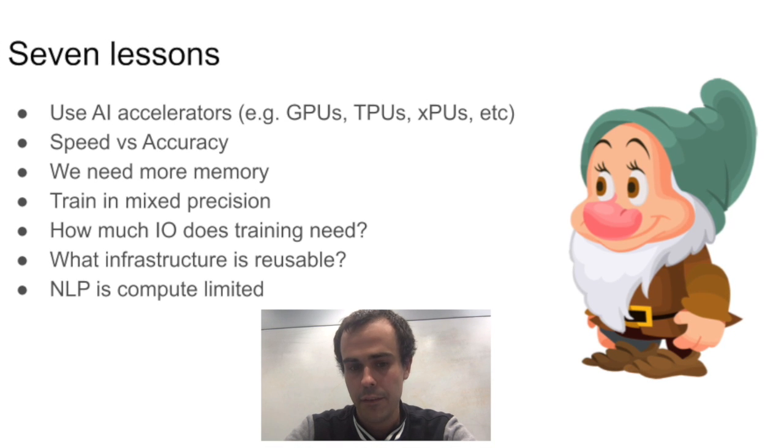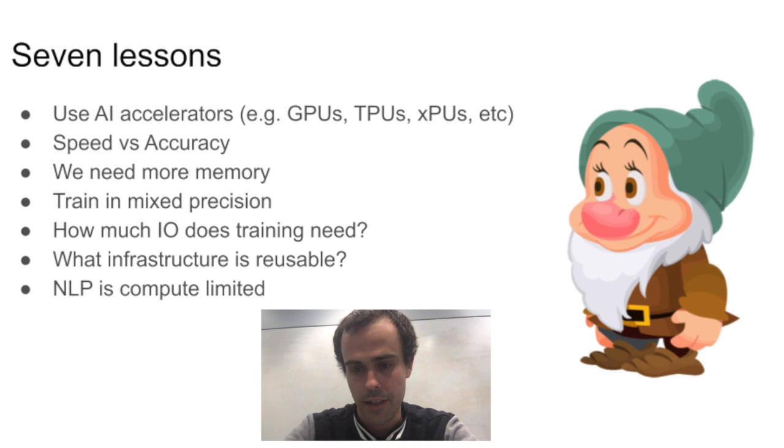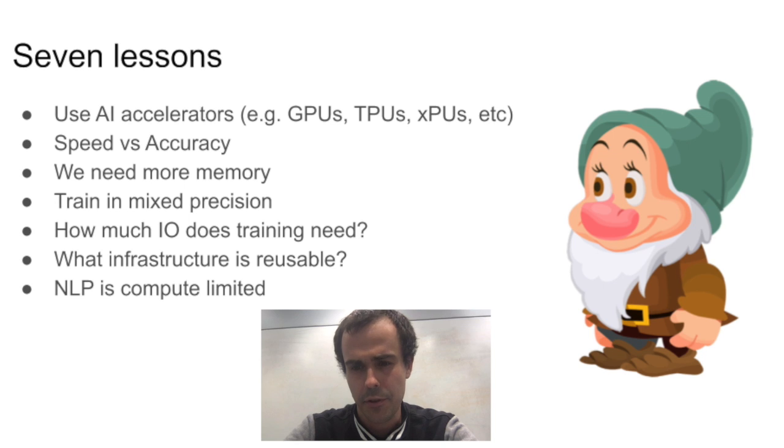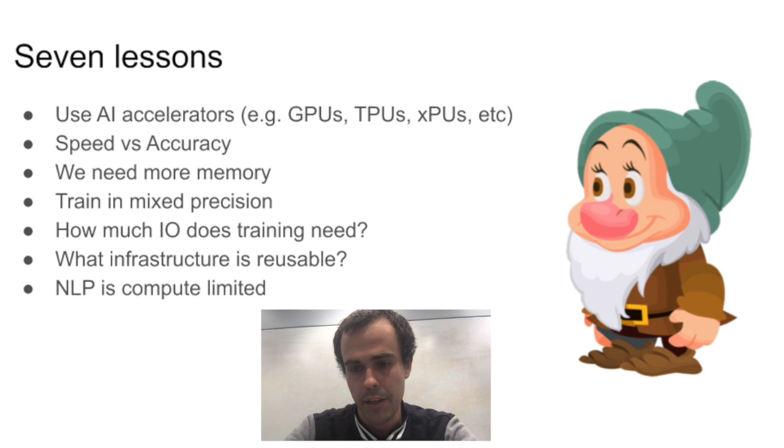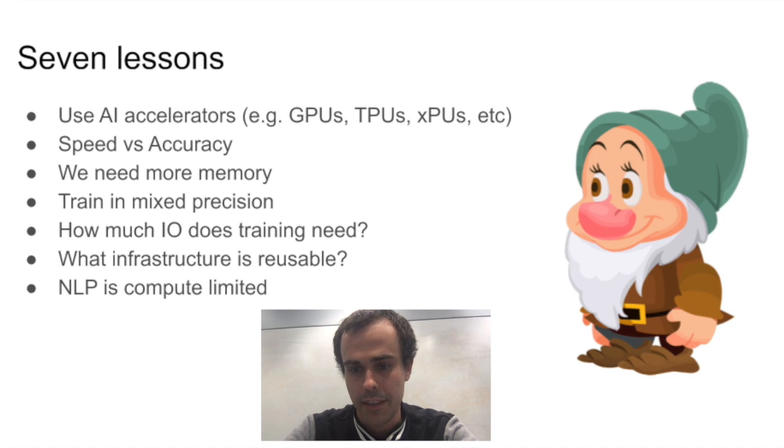A fifth lesson that we learned is something about the IO requirements of training deep neural networks. These things are super compute intensive, but as we have really fast computers, we need to be able to feed them with data. How much data do we need? Let's talk about that.